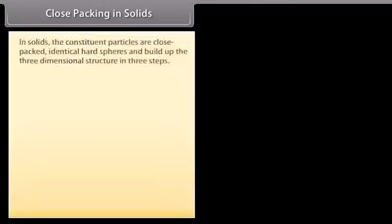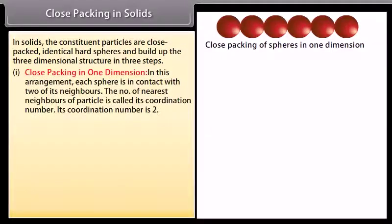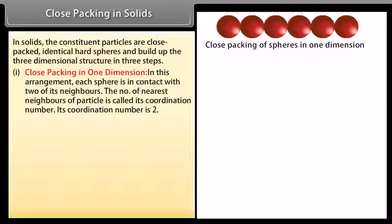Close packing in solids: in solids, the constituent particles are close-packed identical hard spheres and build up the three-dimensional structure in three steps. Step one — close packing in one dimension: in this arrangement, each sphere is in contact with two of its neighbors. The number of nearest neighbors of a particle is called its coordination number. Its coordination number is 2.